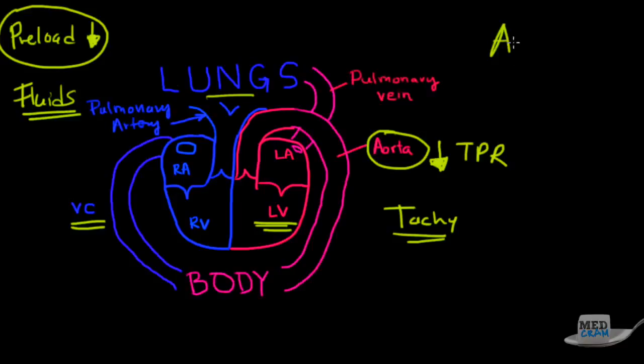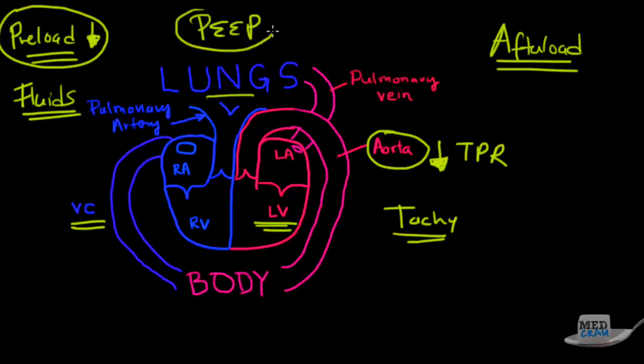So, so far we learned about preload and we learned about afterload. And both these things are very important. One of the things that we talk about in the ventilator lecture, which I hope you'd look at, is the effect of PEEP on all of this. If you have high amounts of PEEP, what that's going to do is putting a lot of pressure on the lungs. That's the positive end-expiratory pressure. Remember what that's going to do is that positive end-expiratory pressure is going to make sure that the lungs are at a higher pressure.